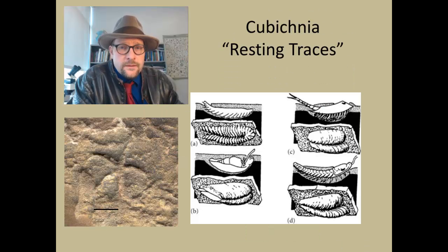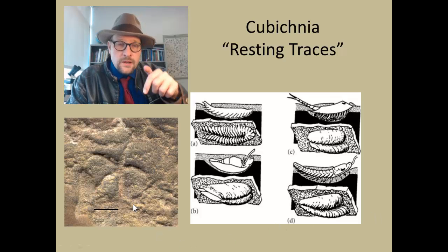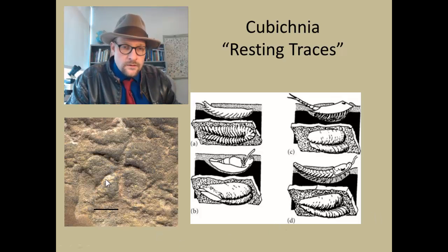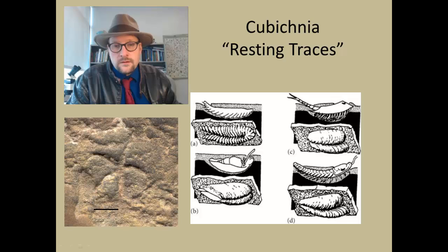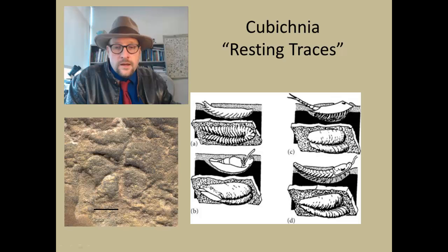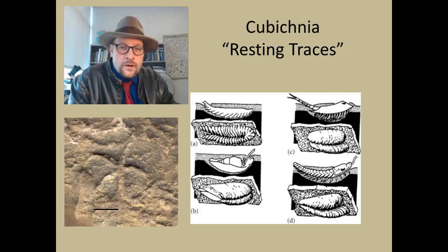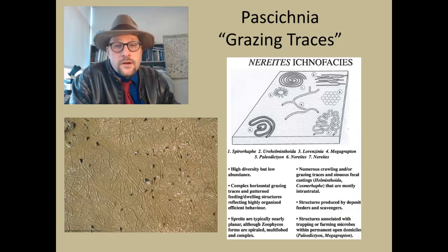The next group is cubichnia — resting traces. These are traces left by organisms that are resting; they are not moving, they are just resting there, and you can get impressions. If you look at this one just below me, you can see there is a resting trace of a starfish in the sediments, and you can get these in sandstones. You can also get resting traces for many arthropods that come and sort of rest in one little area — those are the cubichnia.